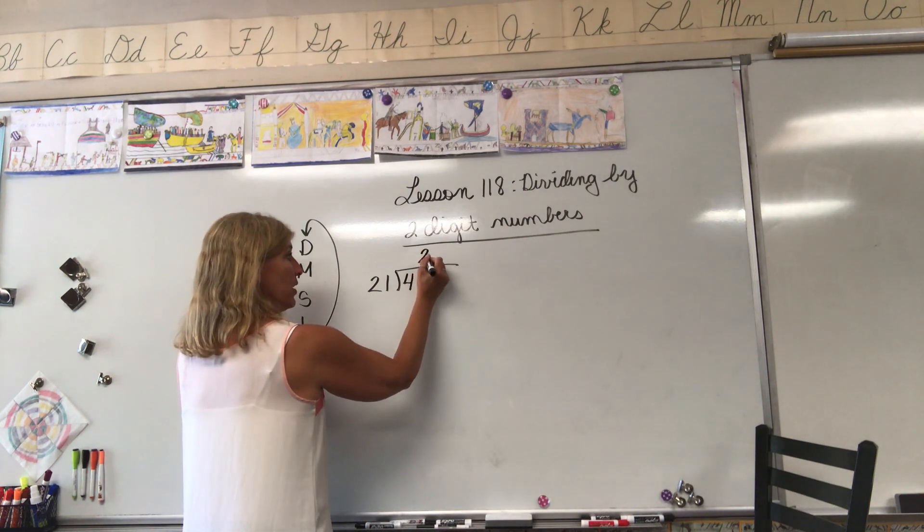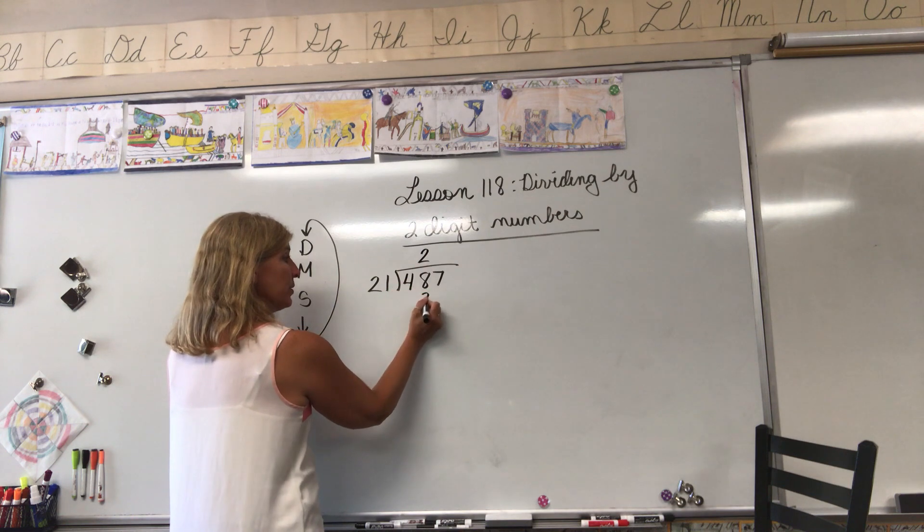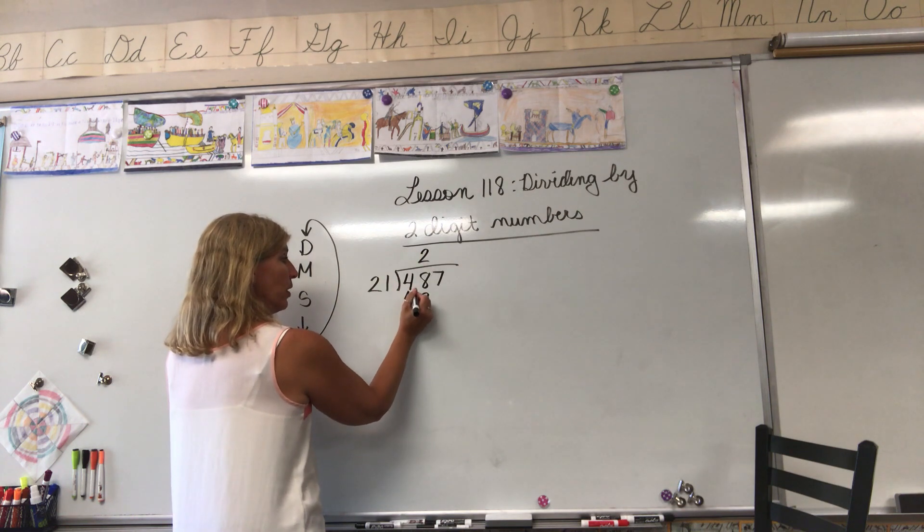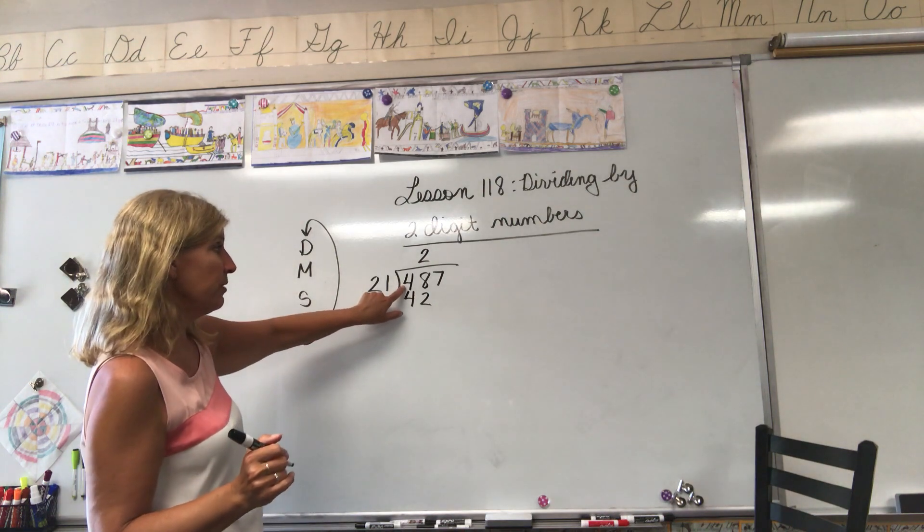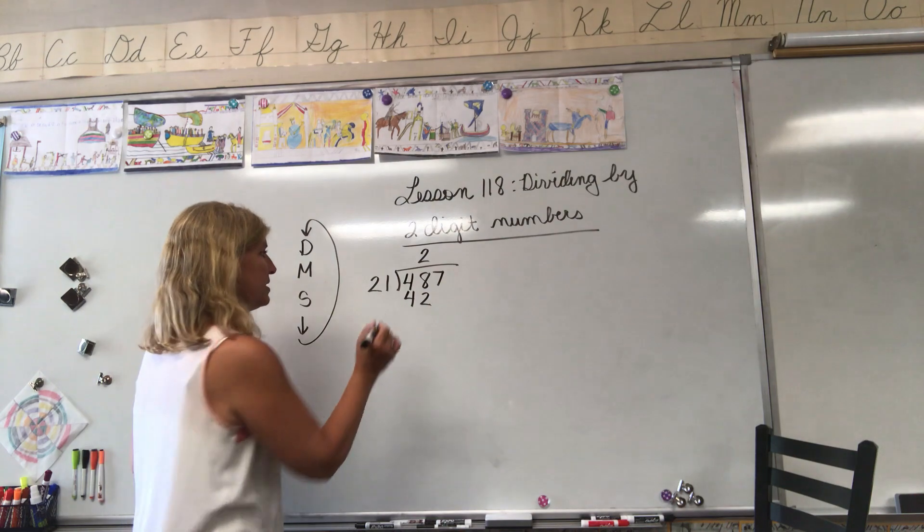Let's round this to 20. How many 20s would be in 48? How many 2s would be in 4? 2. 2 times 1 is 2, 2 times 2 is 4. Here we're going to stop. Is this number larger than the 48? Nope, it's not. We're good, we can continue and subtract.